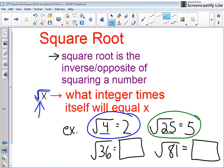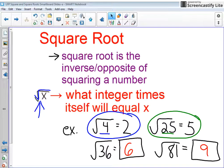So the square root of 36, you can probably guess what that is. But the square root of 36 is going to be equal to 6, because 6 times 6 equals 36. And the square root of 81 is going to be equal to 9, because 9 times 9 equals 81.